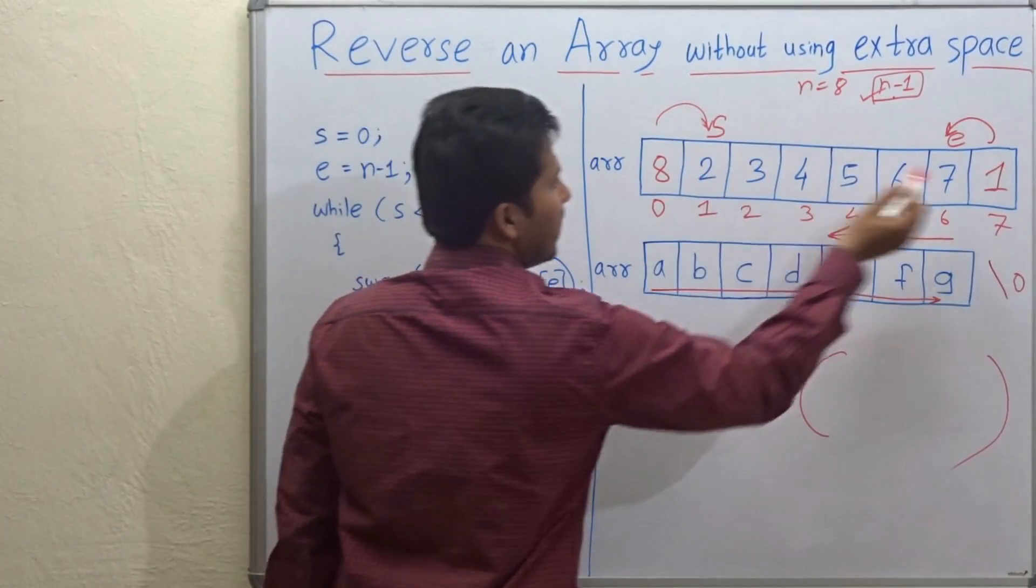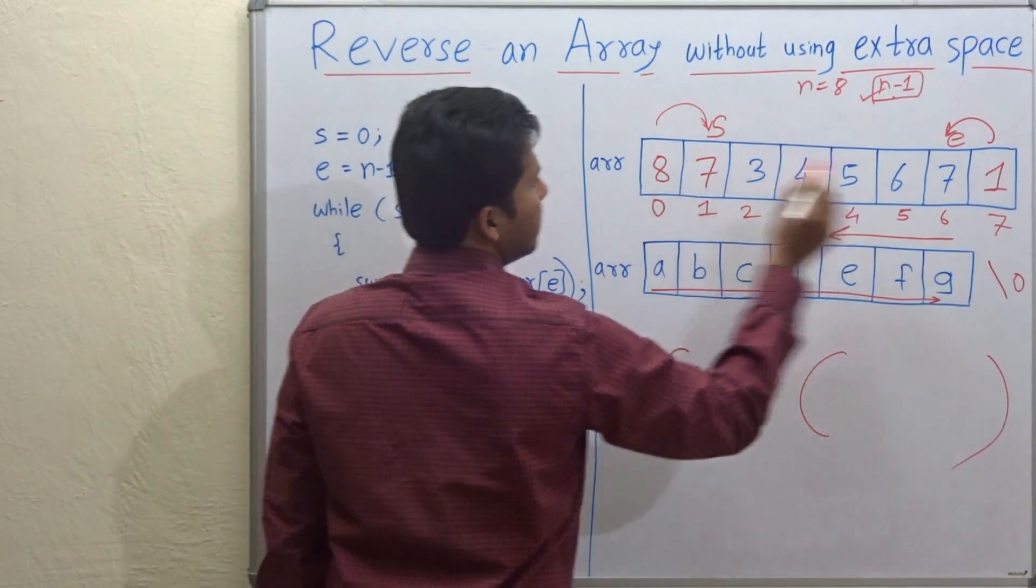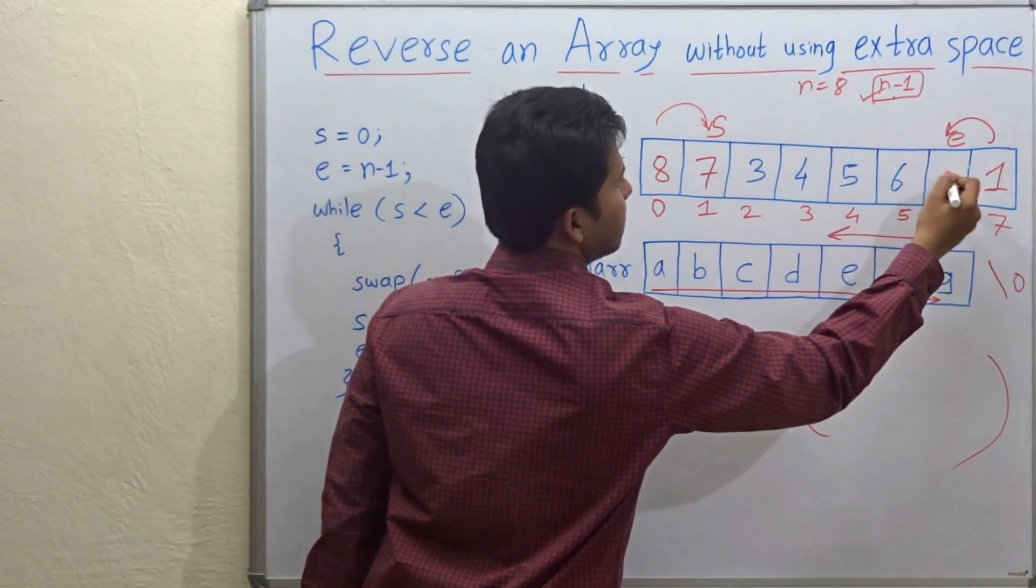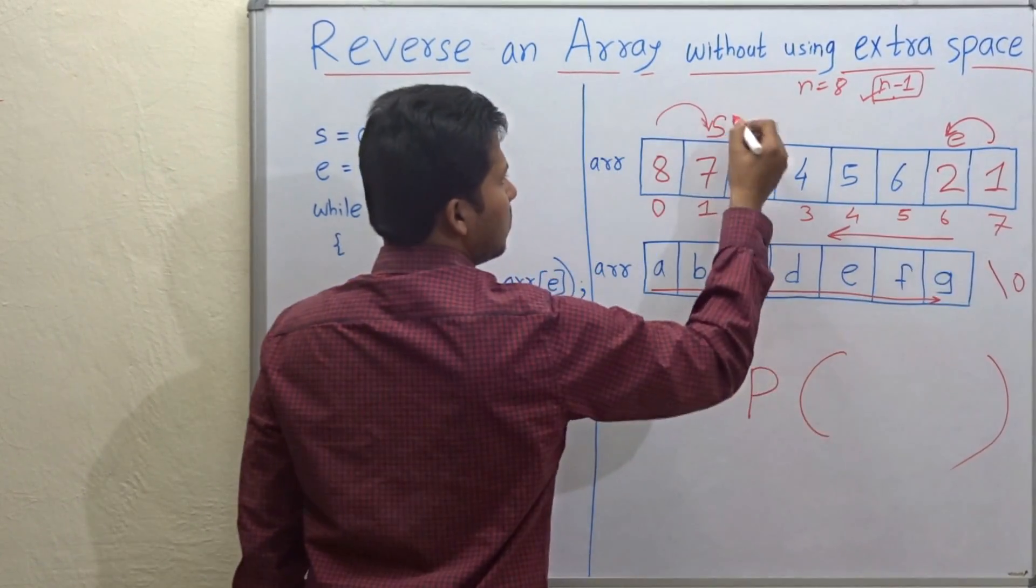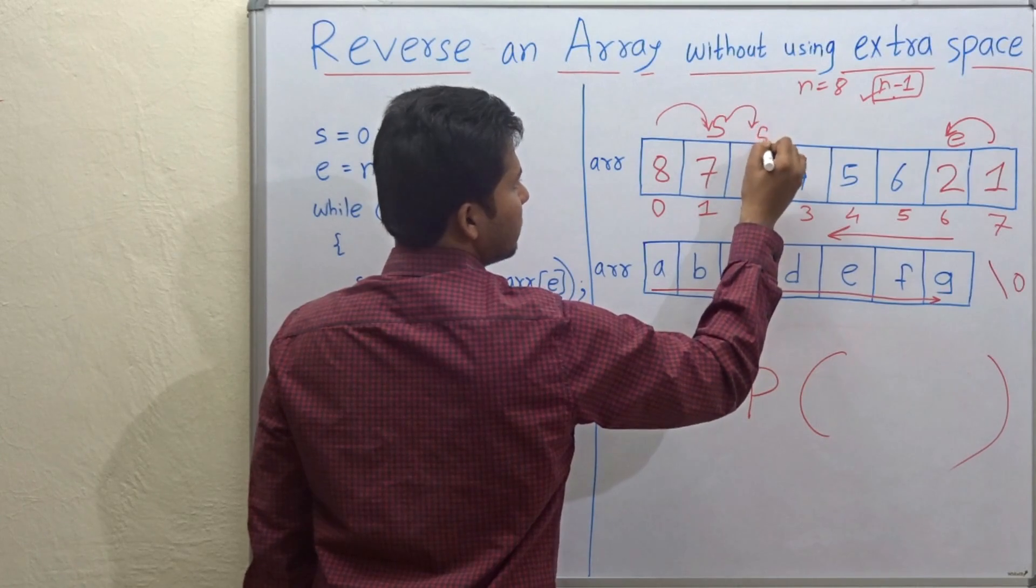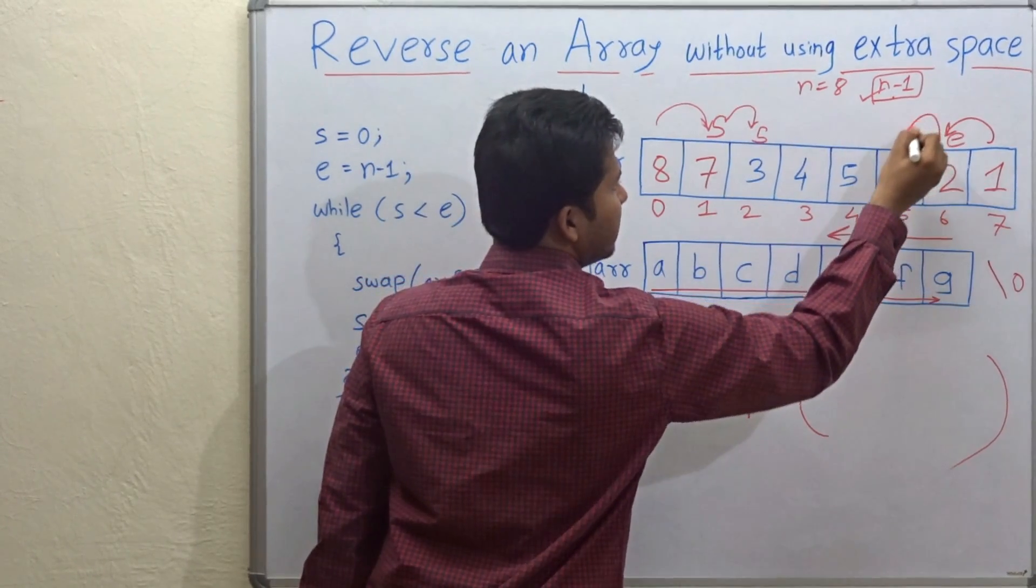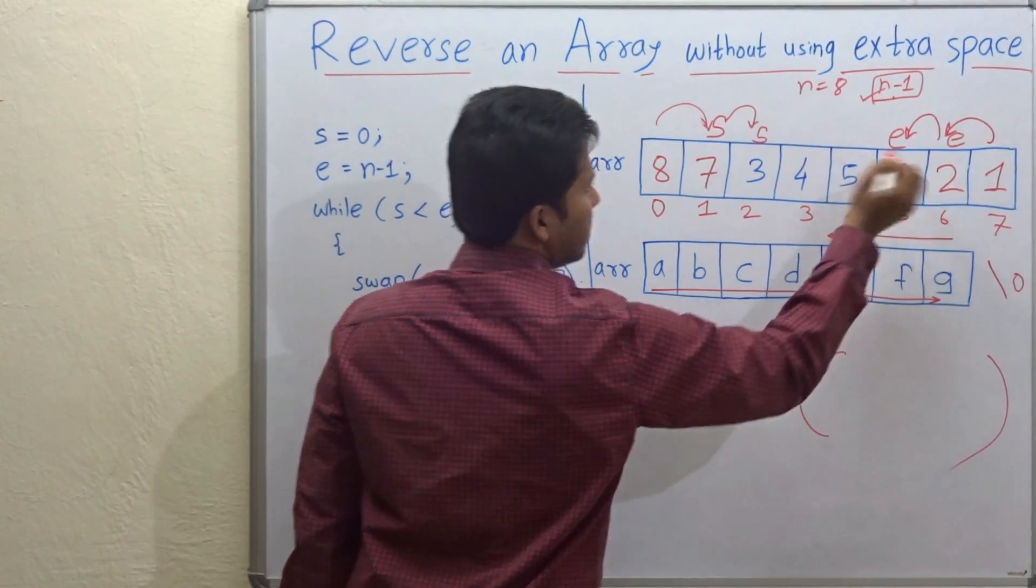Swap 2 and 7. So here it will come 7 and here 2. Now again increment S, so S will come here and decrement E, so E will come here.